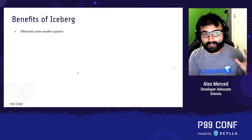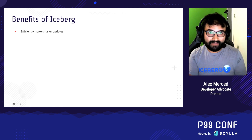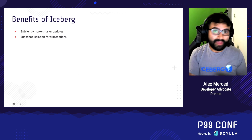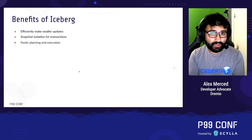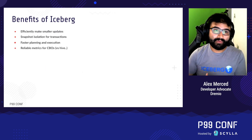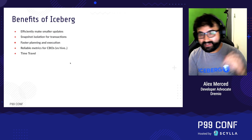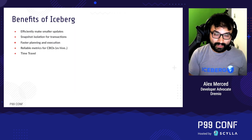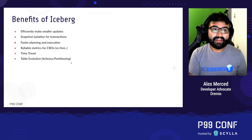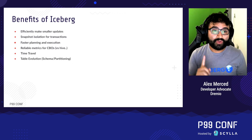So the benefits of Iceberg: you can efficiently make small updates because the granular metadata lets you update a record without an expensive query. You have snapshot isolation enabling concurrent writers and readers without conflict. You have faster planning and execution because all that metadata narrows down what you need to scan. You have reliable metrics because the stats are updated every time you write, so you don't need to run separate analyze queries. And you have time travel — the ability to query previous snapshots of the table.